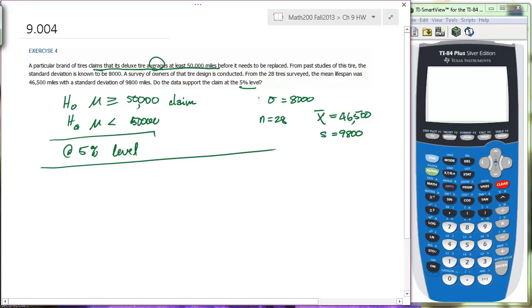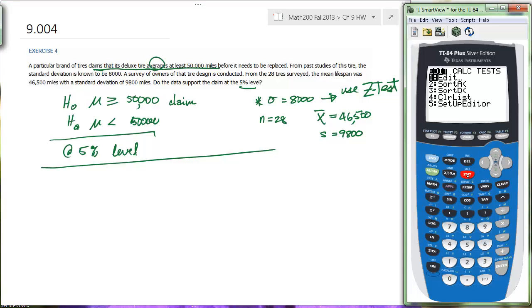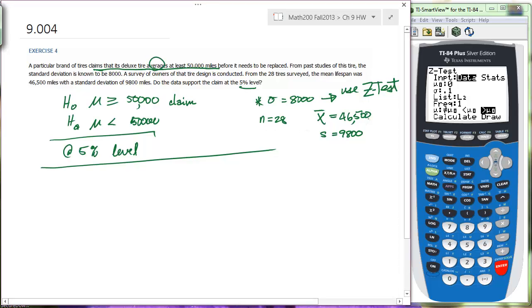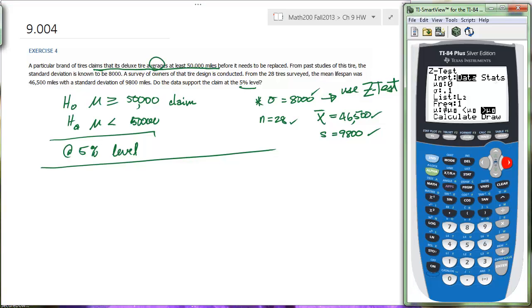We're going to perform... Because we know sigma, we're going to use the z-test. In our calculator, we go to stat and test. And look, it's the very first one, the z-test. Now, we have statistics here that we've found or that we were able to obtain from the problem. So we'll use the statistics option and we'll select that.